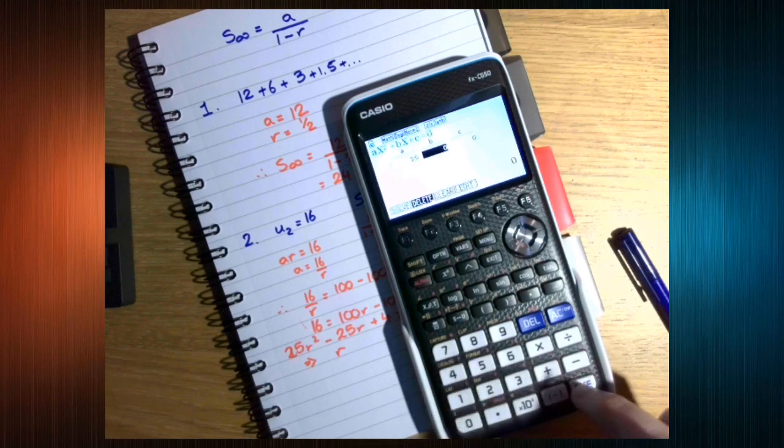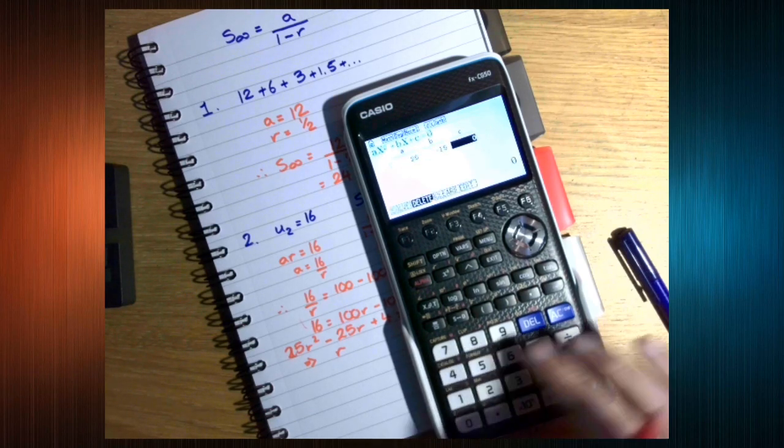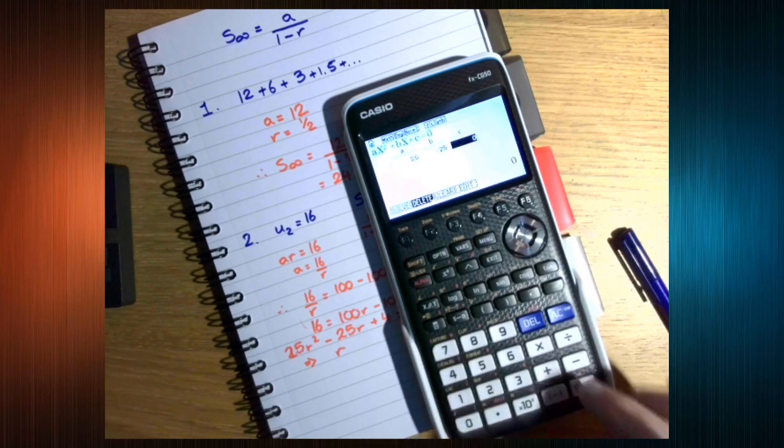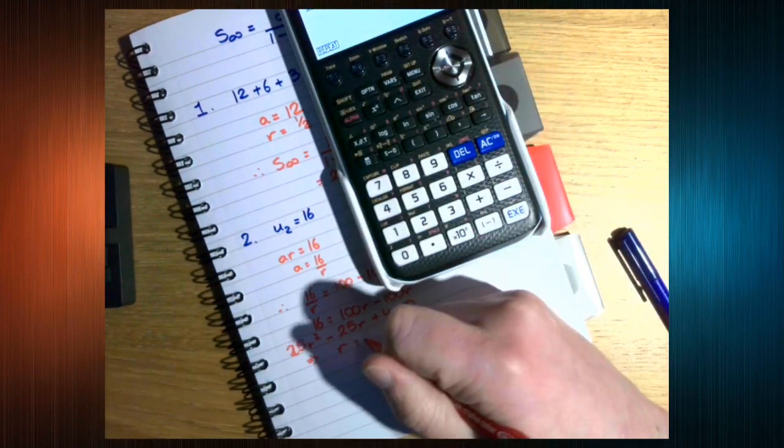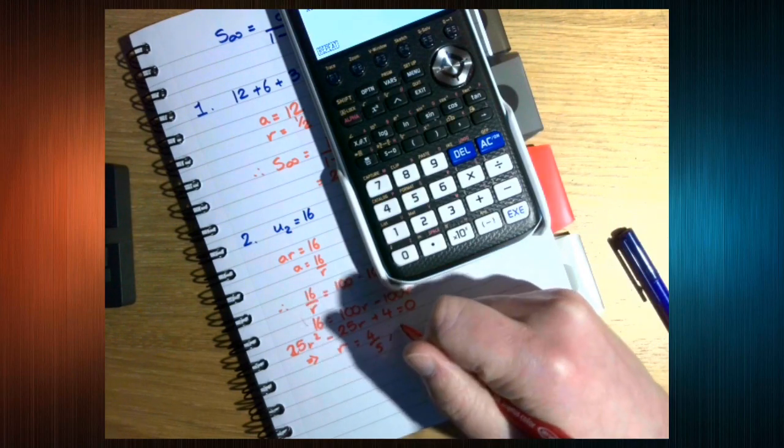Okay, so we've got 25 minus 25 plus 4. And we get the two values of r, r 4 over 5, and a fifth.